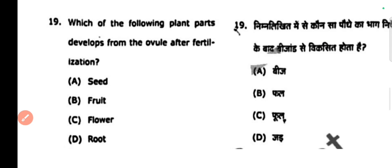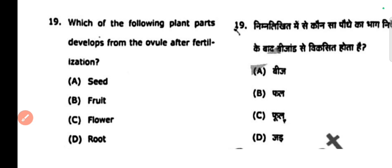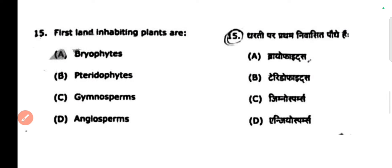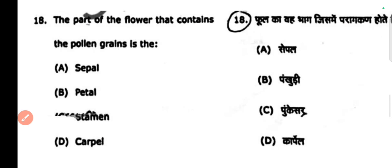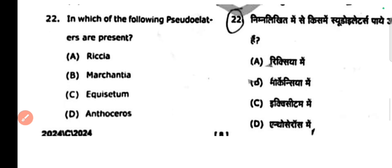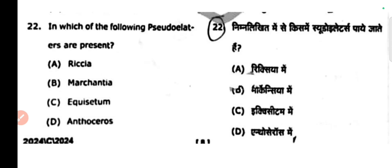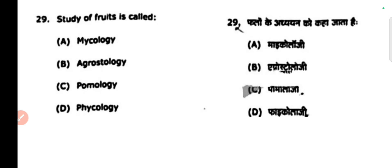Next question: which of the following plants develop from the ovule after fertilization? The ovule develops into the seed. Next question: first land-inhabiting plants are pteridophytes. Next question: the part of a flower that contains pollen grains. Next question: the study of fruits is called pomology.